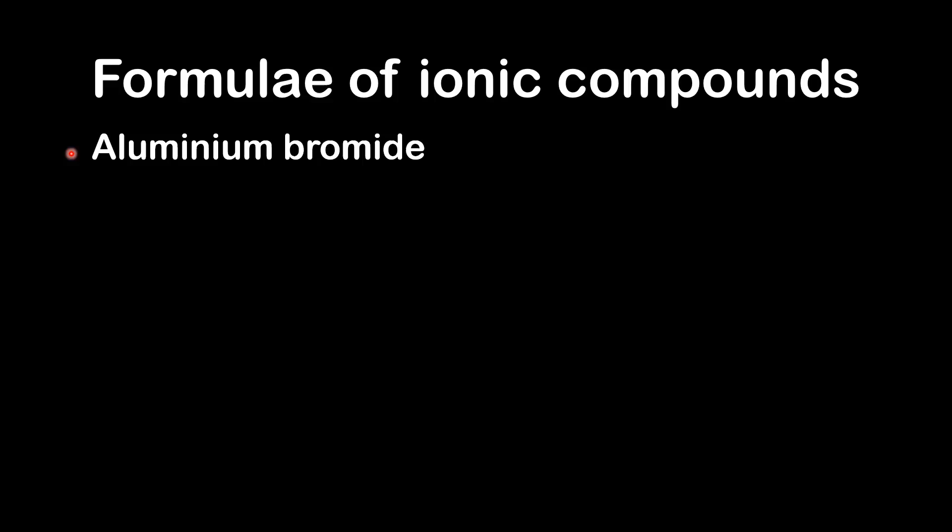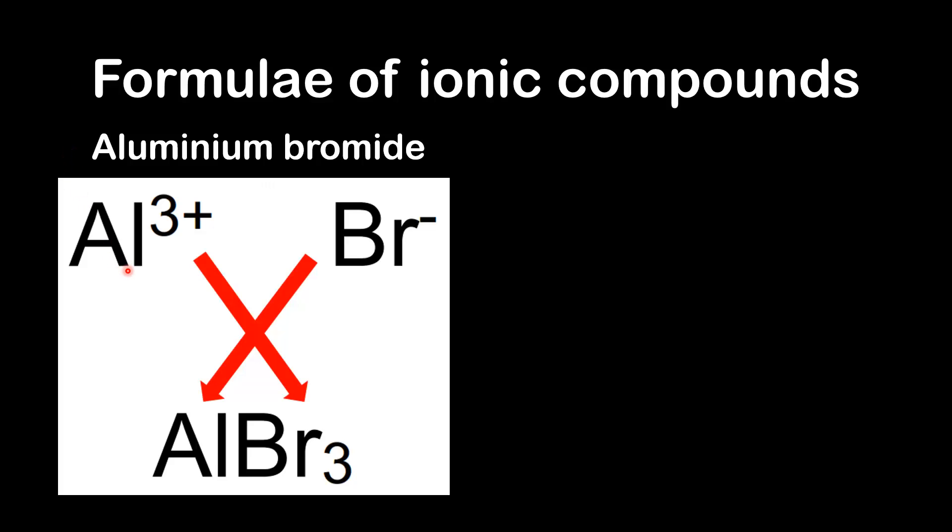Next we have a look at aluminium bromide. So the formula of the aluminium ion is Al3+ and the bromide ion is Br-. So again we use the crossover technique. The 3 goes down to the bottom here. The 1 goes down to the bottom here but we don't write it. So the formula for aluminium bromide is AlBr3.